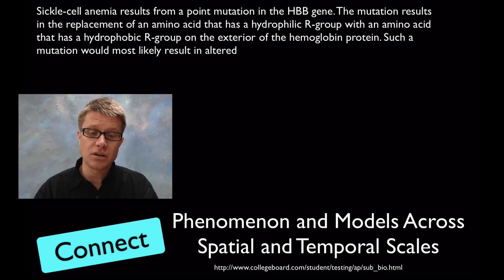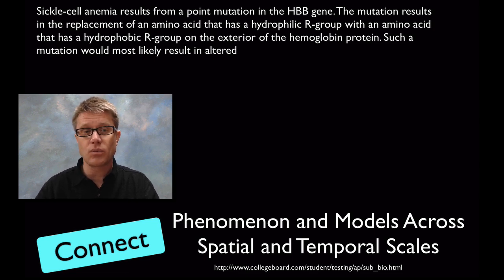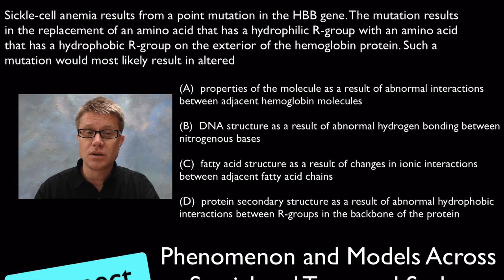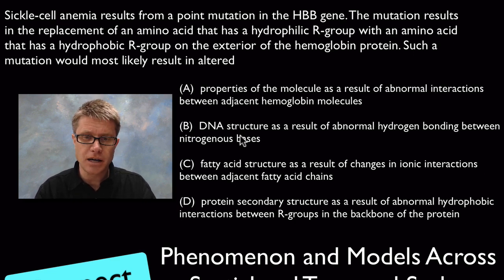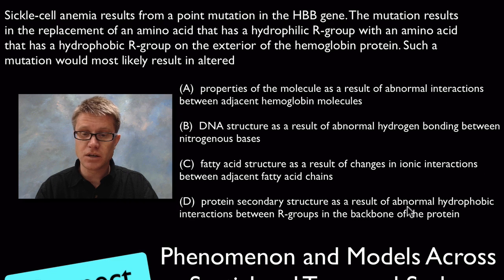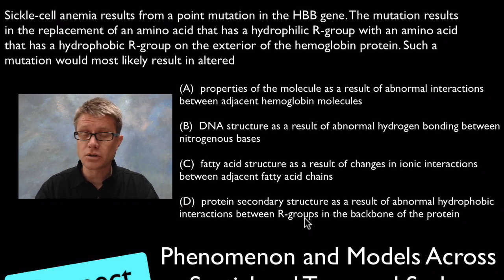They really only want you to be able to do two things: connect phenomena across models of spatial and temporal scale — remember spatial is where things are, temporal is at what time. Here's an example multiple choice question: sickle cell anemia results from a point mutation in a specific gene, resulting in a replacement of an amino acid that has a hydrophilic R group. Which of the following would likely result? Working through it, we can eliminate answers about DNA structure or fatty acids since we're replacing an amino acid — we're dealing with proteins. That narrows it to A or D.